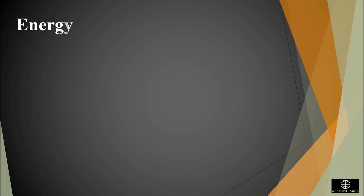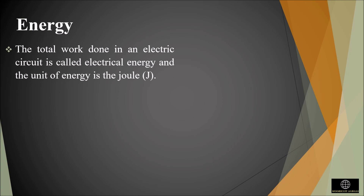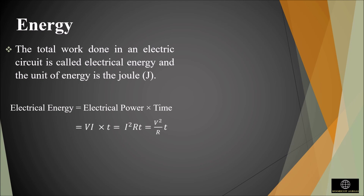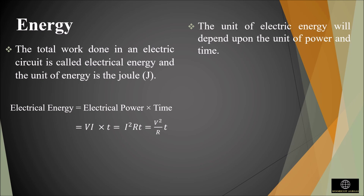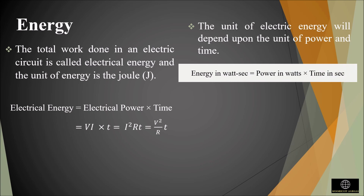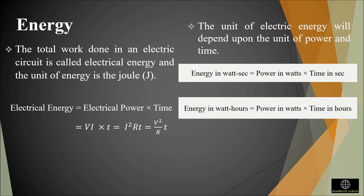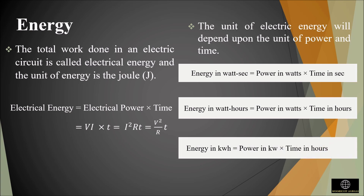The total work done in an electric circuit is called electrical energy, and the unit of energy is joule. By substituting the electric power equations mentioned above, we get three forms of equation for electric energy as well. The unit of electric energy depends upon the unit of power and time. If the power value is known in watts and time in seconds, then the energy unit will be watt-second. Similarly, if the power value is known in watts and time in hours, the energy unit will be watt-hour. If the power value is known in kilowatts and time in hours, then the unit of energy will be kilowatt-hour.